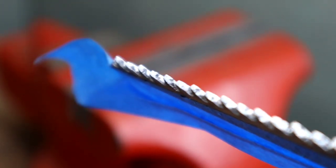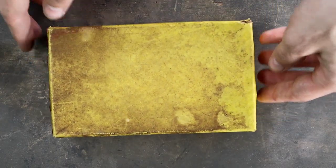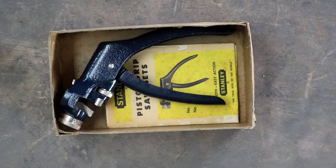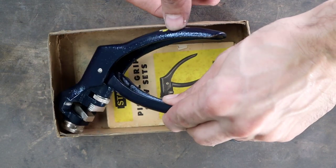After a half a dozen or so sharpenings, the teeth on a blade are going to need to be reset. This Stanley pistol grip saw set was made in the 1950s and a piece like this in this kind of condition is about $80, but you can get one for much cheaper.